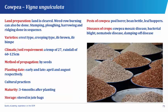Cowpea, which has its botanical name as Vigna unguiculata, is a member of the pulses or legumes. It belongs to the family Leguminosae. It is rich in proteins and is commonly fed on by man. The fruit of cowpea is called a pod. In planting cowpea, the land is cleared and the weed gotten from the land is burned, and stumping, plowing, harrowing, and ridging are done in sequence.